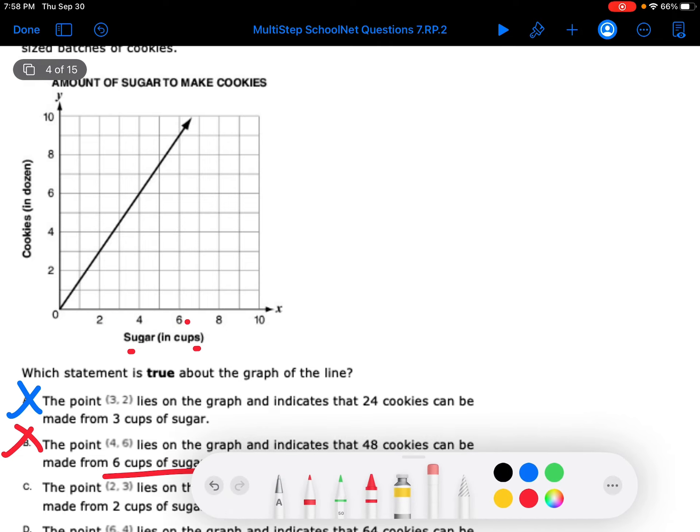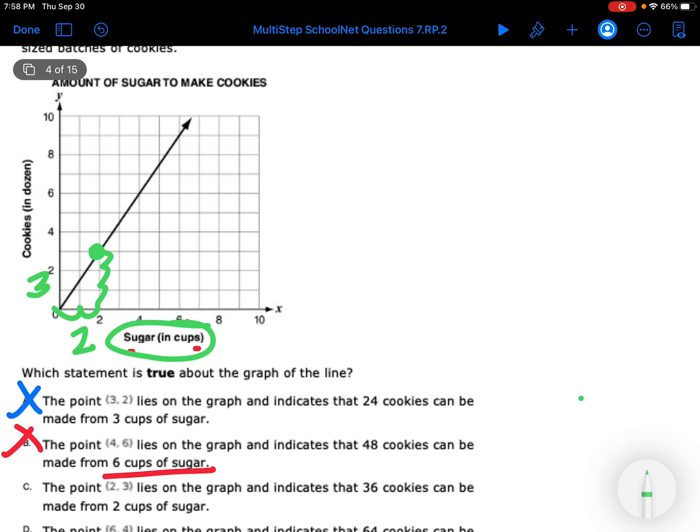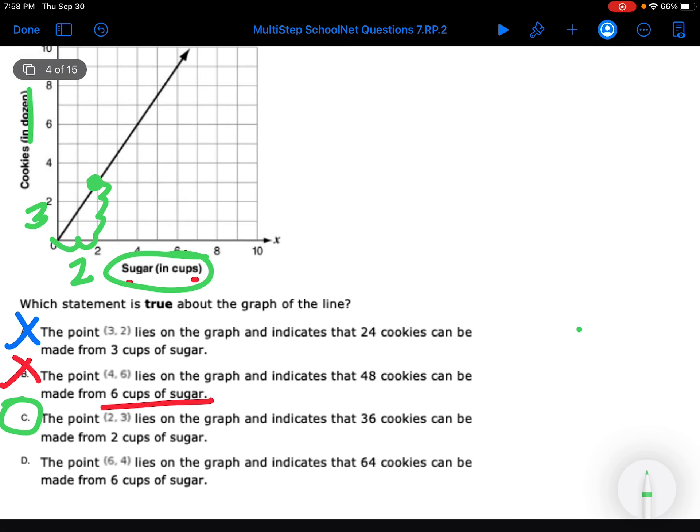C says (2, 3) is on the graph. So 1, 2, 1, 2, 3. That's true. And it says that 36 cookies can be made with 2 cups of sugar. Well, yes, 2 cups of sugar. So the 2 represents the X. The 3 represents the Y. And that's dozen cookies. 3 times 12 is 36. So I think it's C. But I'm going to check the last one just to make sure.